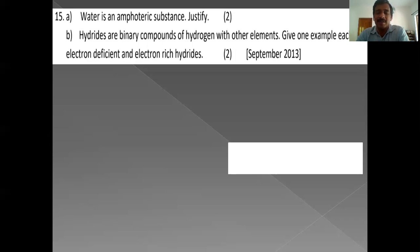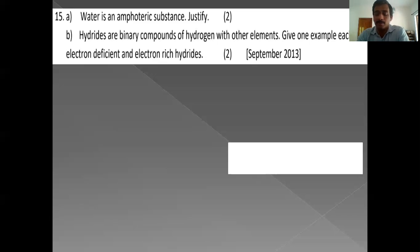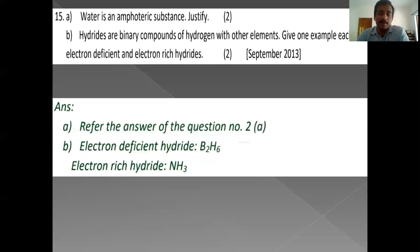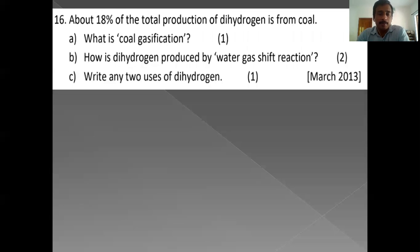Hydrides are binary compounds of hydrogen with other elements. Give an example for electron-deficient and electron-rich hydrides: electron-deficient — B2H6 (diborane); electron-rich — NH3, H2O, HF.